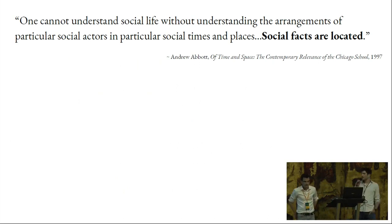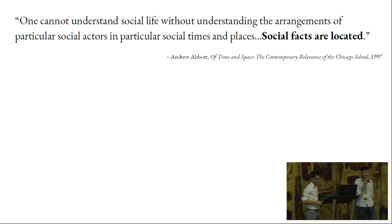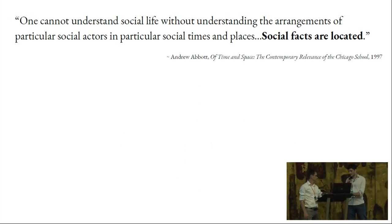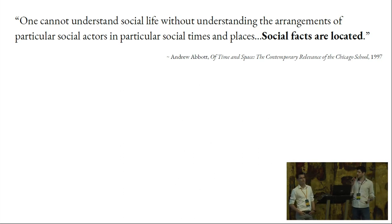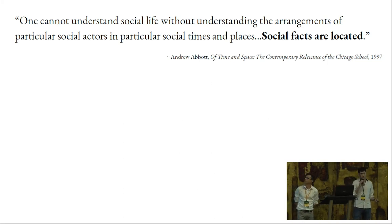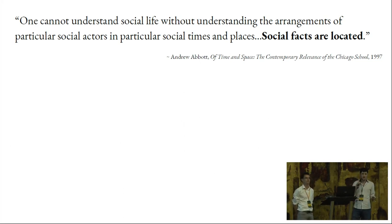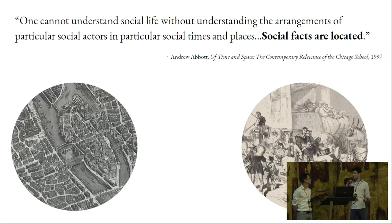This talk is about studying social facts in history that are located in space. The idea, as stressed by Andrew Abbott, a sociologist of the Chicago School, is that if you study the spatial properties of social facts, this is the only way you can understand them fully and very deeply. In fact, social facts are not only located — there is a kind of complex relationship between social facts and social phenomena and the geographical space.